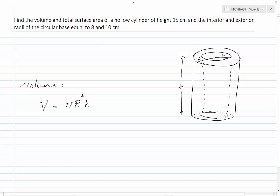which is the volume of the original cylinder, which we assume not to be hollow, minus pi small r squared h, which is the volume of the hollow inside the cylinder. This will give us the volume of the hollow cylinder.